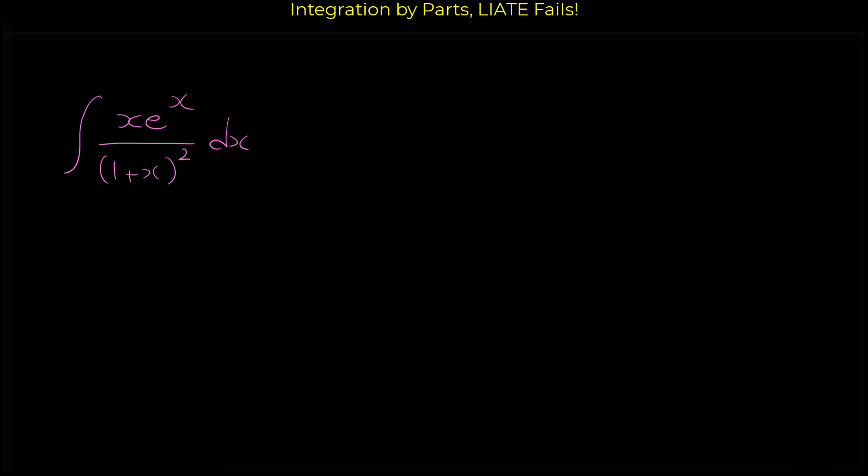Hello and welcome. In this video we want to do an example of integration by parts where the LI8 acronym for choosing u fails. The question is this integral of x e to the x over 1 plus x, all squared, dx.